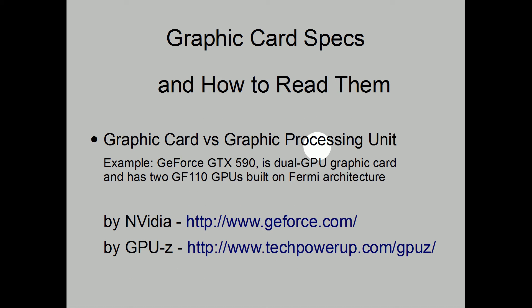Let's take a look at graphic card specifications and how to read them. First I want to make a difference between a graphic card and a GPU. A graphic card is a piece of hardware which goes into your PCI Express slot. A GPU, or graphics processing unit, is the processor on the graphic card which makes the computation. For example, the GeForce GTX 590 is a dual GPU graphic card and has two GF110 GPUs built on Fermi architecture.